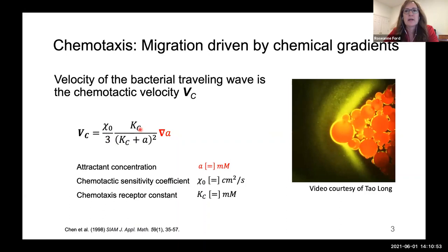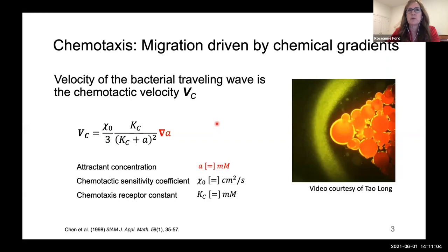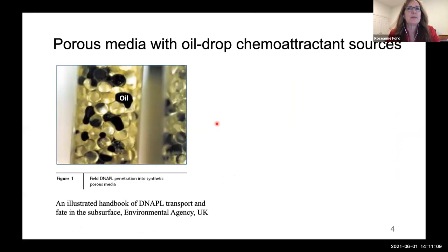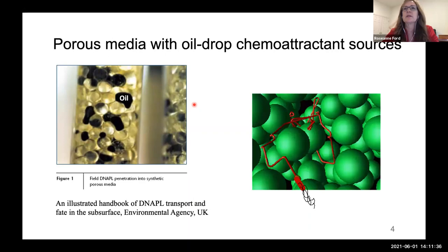The chemotaxis receptor constant Kc is an indicator of the attractant concentration to which the bacteria are most sensitive. We use this expression to quantify the chemotactic velocity of the bacterial population moving toward a chemical attractant. We must also consider two complexities associated with hydrocarbon-contaminated aquifers. First, oil and water don't mix, so hydrocarbons released into groundwater can end up as oil blobs that get trapped within granular media, serving as long-term sources of contamination that slowly leach into the surrounding aqueous phase.